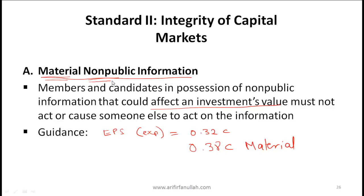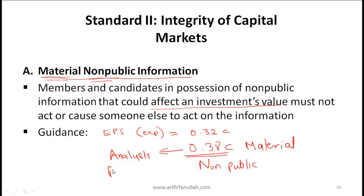What about non-public? Non-public information is any information that, as the term implies, is not known to the public. In the example just given, if you are close to the CEO and know the earnings per share will be 0.38 cents, that is non-public because the information has not been made public yet. Even if this information is given to analysts but has not been disseminated to the public, it is still considered non-public. Only when an announcement is made so that anybody in the public would have access to it do we classify the information as public.